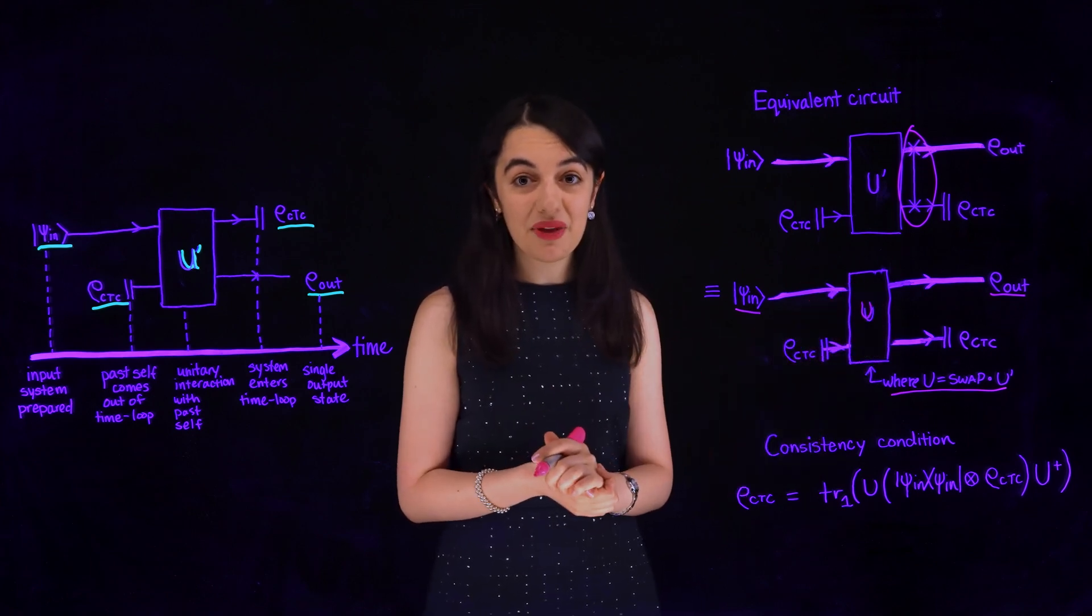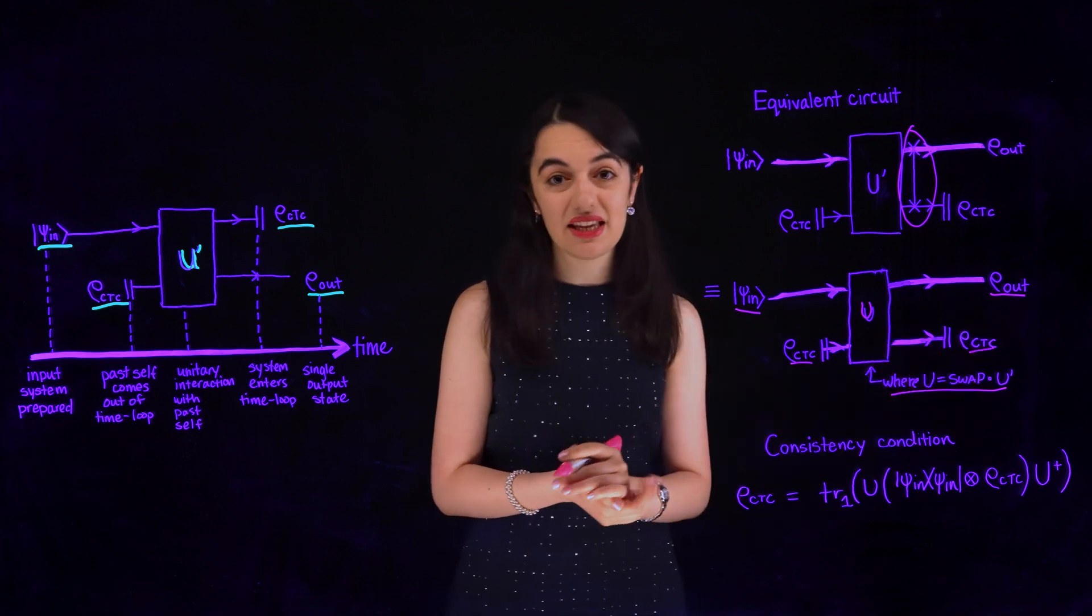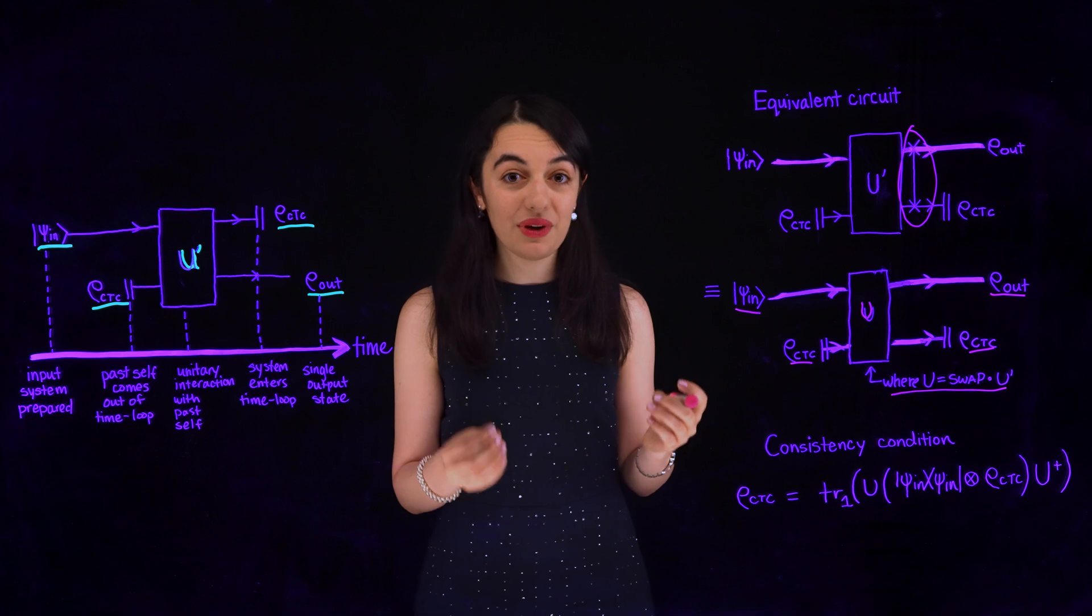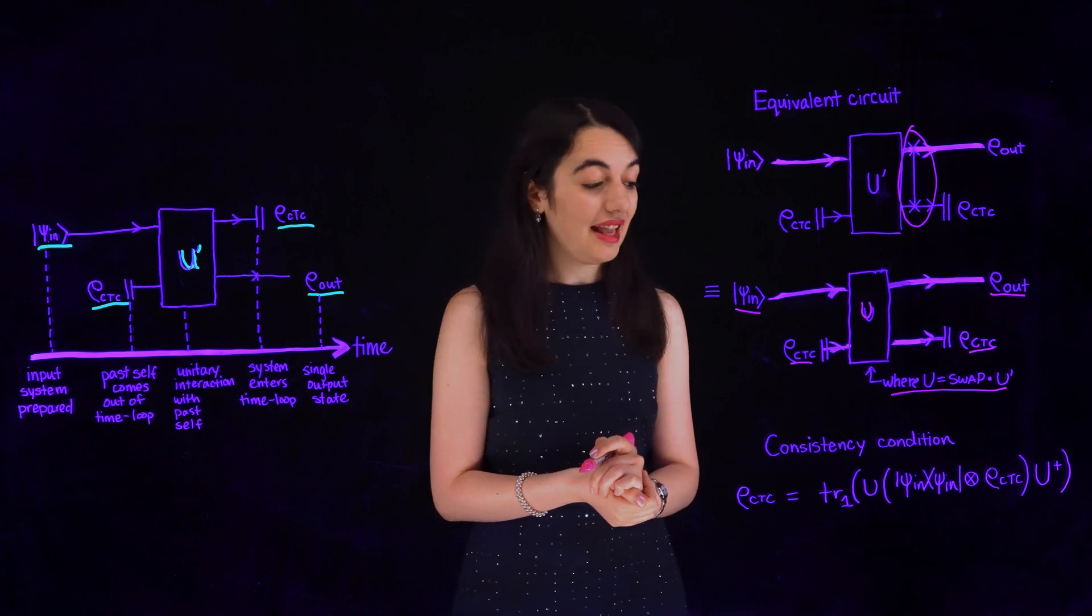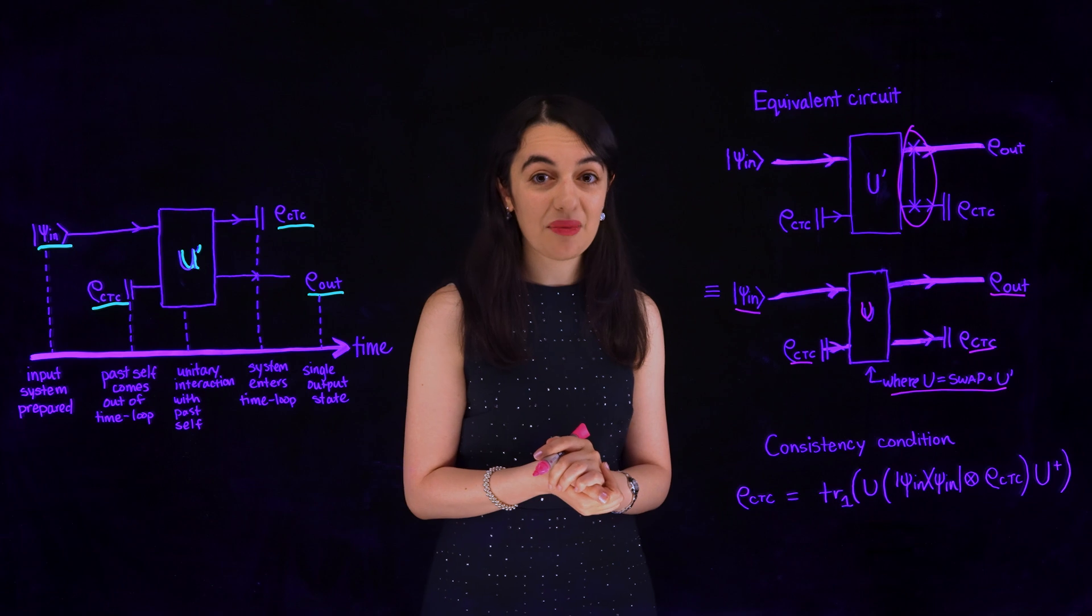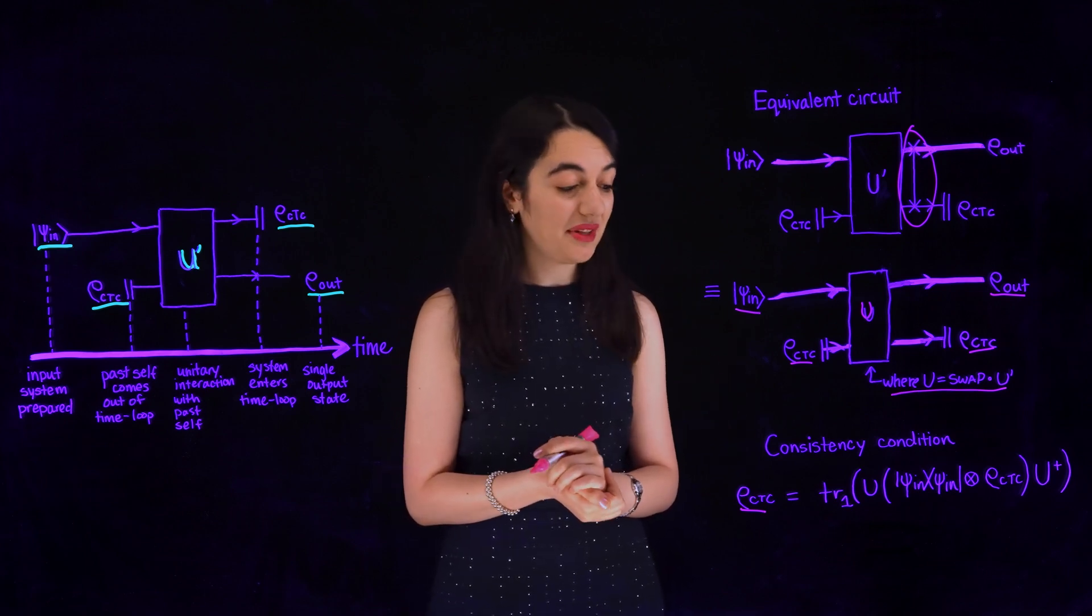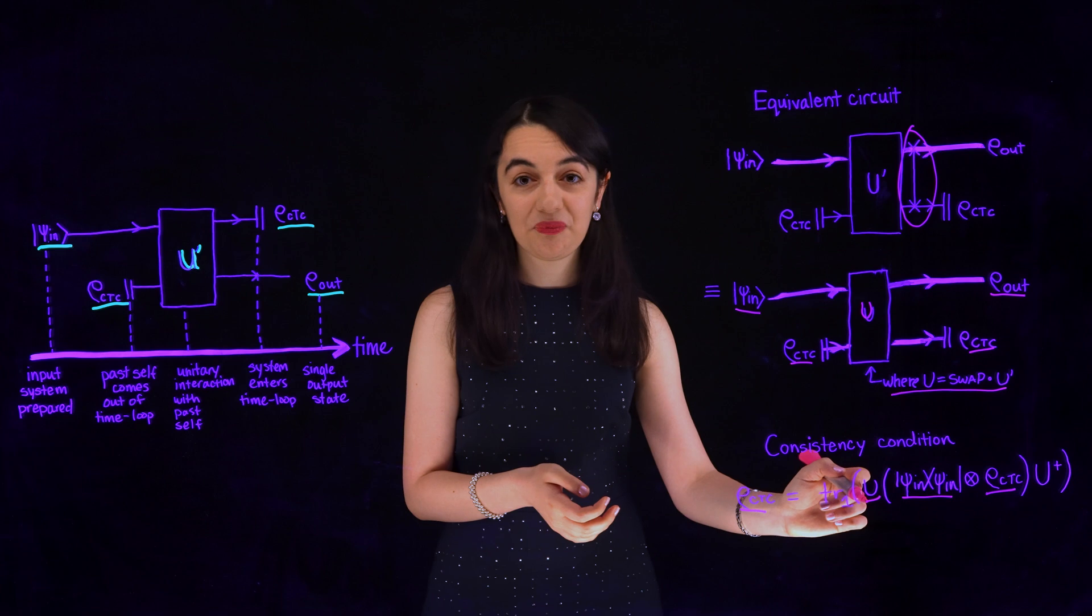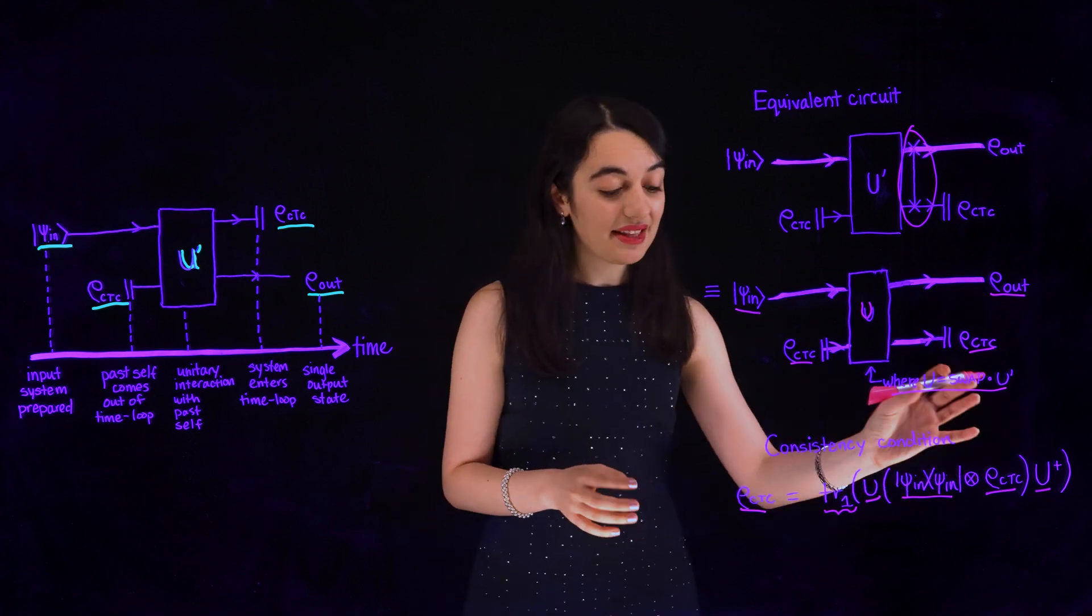And the second quantum system comes out of the time machine in the state ρ_ctc and then goes back into the time machine in the state ρ_ctc after the unitary U. So, in our rewritten circuit, the consistency condition for avoiding grandfather paradoxes is that the qubit that goes into the time loop has to be in the same state as the qubit that comes out of the time loop. Mathematically, the reduced state of the system that goes into the time loop, ρ_ctc, must be equal to the state we get when we let the input state ψ_in and the input state ρ_ctc interact via the unitary U and then trace out the first system. So, the reduced state of the second system stays as ρ_ctc.